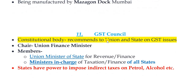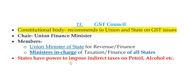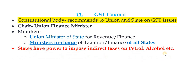The GST Council — Goods and Services Tax Council — is a constitutional body that recommends to the union and states on GST issues. It is chaired by the Union Finance Minister. Members include the Union Minister of State for Revenue or Finance and all state ministers in charge of taxation and finance. States have the power to impose indirect taxes on petrol and alcohol separately, even after GST was constitutionally enacted.